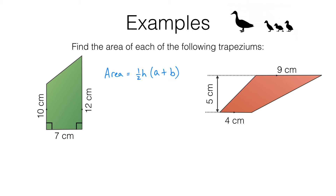a and b are the lengths of the two parallel sides, and we can see from the marks here that the two parallel sides are 10 and 12 centimetres long. h is the perpendicular distance between them, which is 7 centimetres. So that's ½ × 7 × (10 + 12), which is ½ × 7 × 22. Doing ½ × 22 = 11, then 7 × 11 = 77. So the area of this trapezium is 77 centimetres squared.